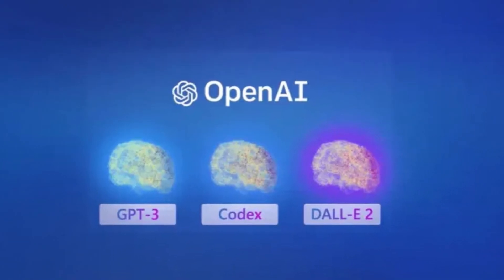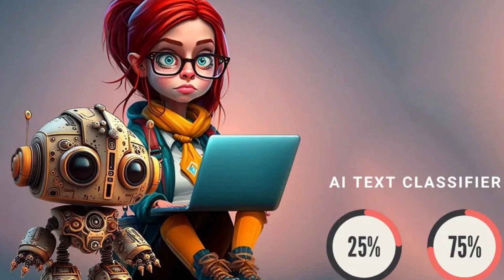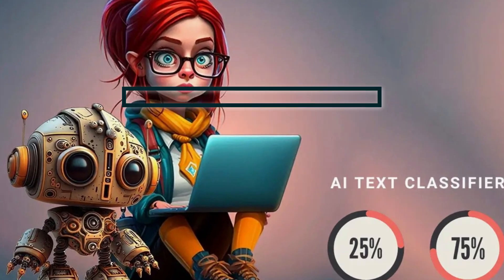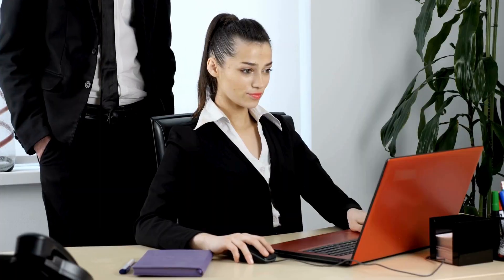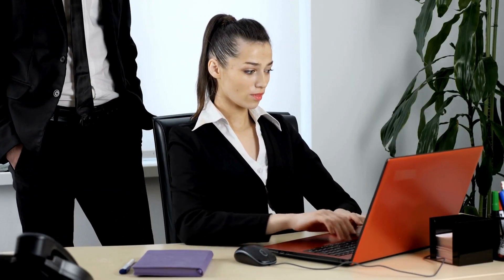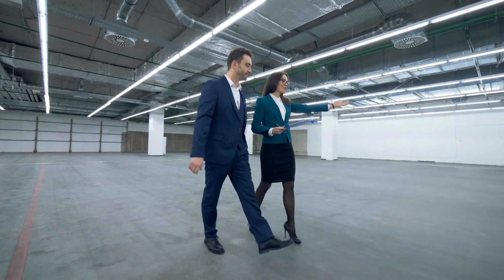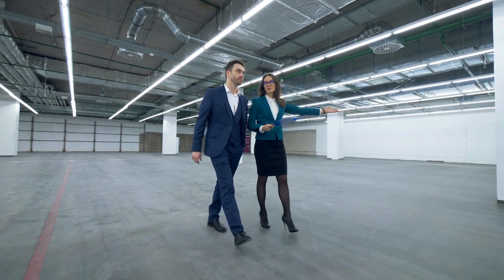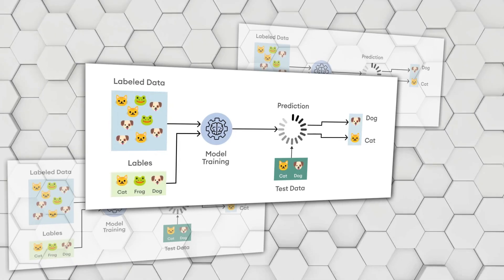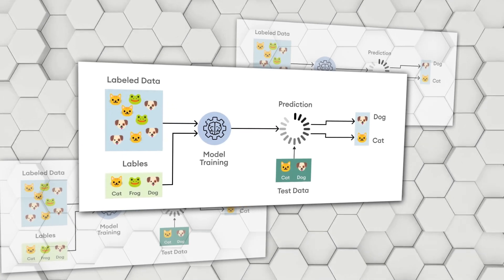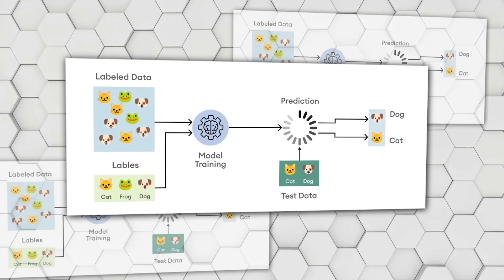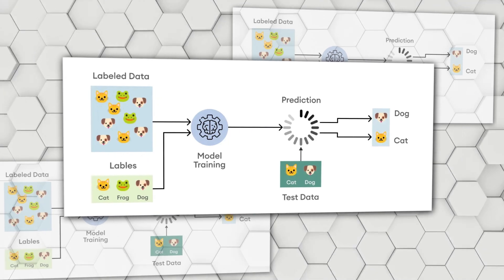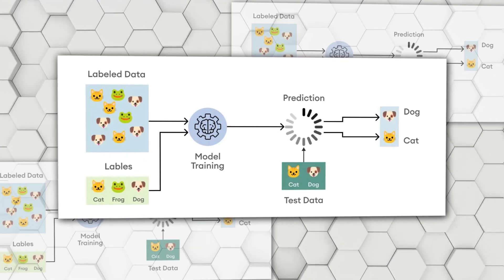Once an OpenAI product is in use, its text classifier will examine and decline text input queries that violate its usage standards, such as those requesting excessive violence, sexual content, offensive images, the likeness of celebrities, or other people's intellectual property. Additionally, they have created powerful image classifiers that are used to examine each video frame and make sure it complies with their usage guidelines before displaying it to the user.